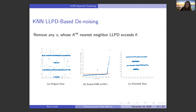To address the first potential issue, it's important to denoise your data. We apply a KNN-LLPD based denoising procedure: remove any data point xᵢ whose k-th nearest neighbor LLPD exceeds some threshold θ. You compute each point's k-th nearest neighbor LLPD, sort those distances to get a nice elbow plot, then truncate at the top of the elbow and remove those points to denoise the data.